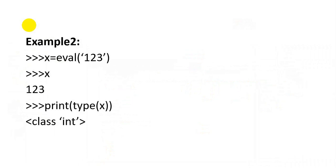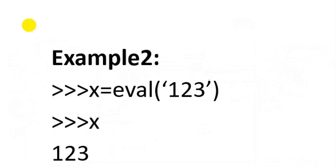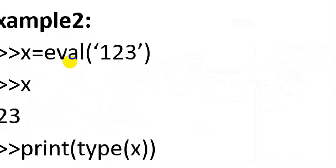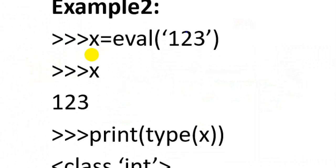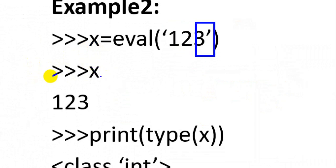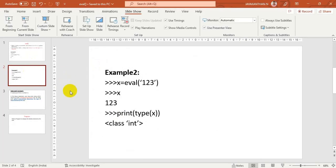For example, you can give x equal to eval('123'). The string '123' is passed to eval, and when I print it in interactive mode I get 123 as output. When I check the type, it is class integer — eval converts the string into the appropriate data type, which is integer.